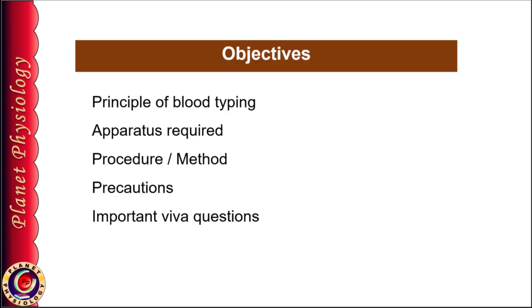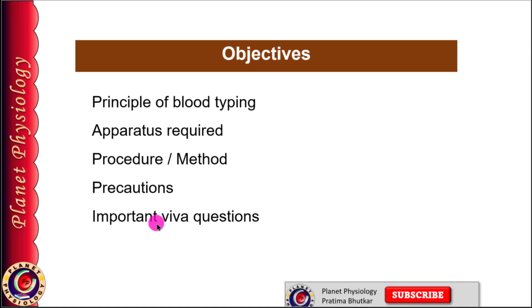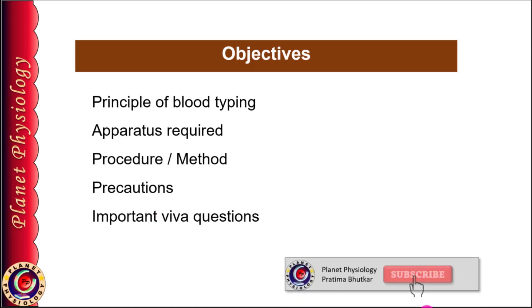Today we shall learn how to accurately determine blood group under the following headings: principle of blood typing, apparatus required, details about the procedure, how to accurately identify different blood groups, precautions that must be taken during the procedure, and at the end some must-know-why questions on this topic. Watch the entire video carefully till the end. If you haven't yet subscribed to my channel, please subscribe now.